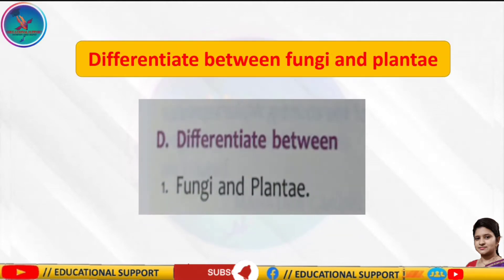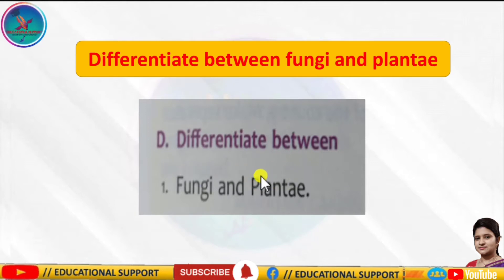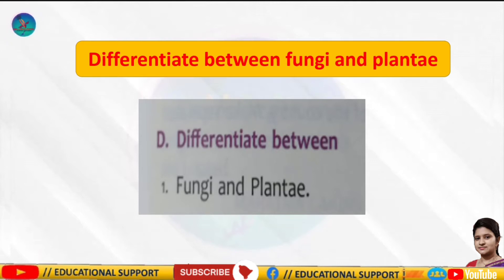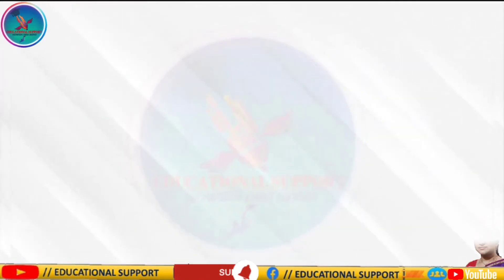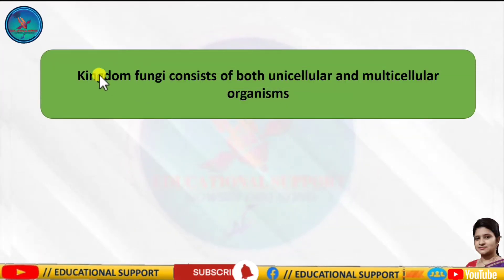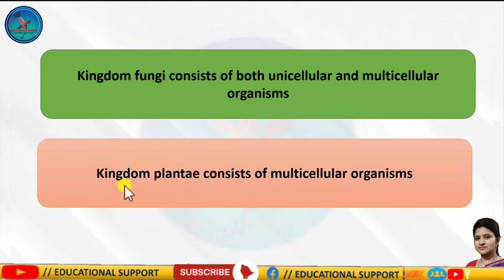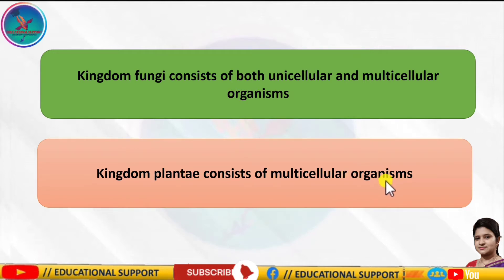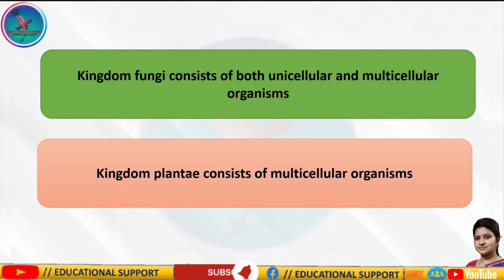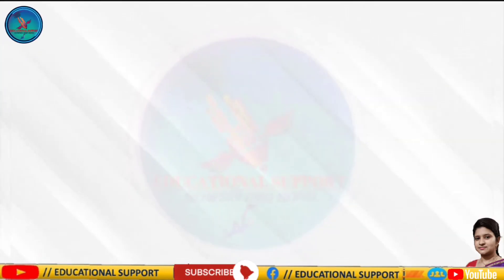Today I am basically discussing from the exercise: differentiate between fungi and plantae. So first, kingdom fungi consists of both unicellular and multicellular organisms, but kingdom plantae consists of only multicellular organisms. You have to remember these lines.